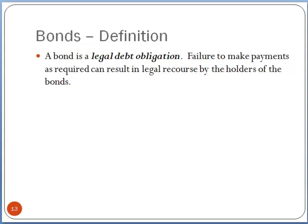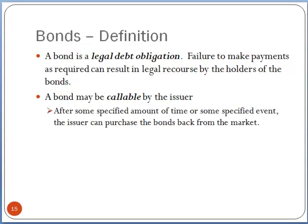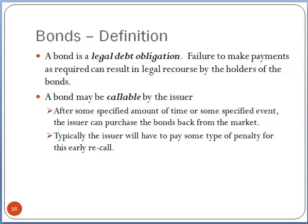A bond is a legal debt obligation. Failure to make payments as required can result in legal recourse by the bond holders. A bond can be callable by the issuer — given certain parameters agreed upon when the bonds were first created, a bond issuer may be able to require the person holding the bonds to return them. Typically the issuer is going to have to pay some type of penalty for this kind of early recall. And there are many other features that bonds can have.